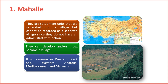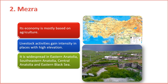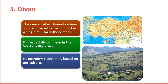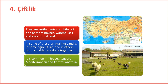All these nomenclatures are local expressions in Turkey and do not have exact equivalents in English. As a rural settlement, the Mahalle is different from the neighbourhood — it is an autonomous community governed by a mutar. They are settlement units separated from a village but cannot be considered a separate village since they lack an administrative function. They can develop and become a village. It is common in the Western Black Sea, Western Anatolia, Mediterranean, and Marmara regions. Mezra: its economy is mostly based on agriculture, with livestock activities gaining intensity in places with high elevation; it is widespread in Eastern Anatolia, Southeastern Anatolia, Central Anatolia, and Eastern Black Sea. Divan: rural settlements where several Mahals are united under a single mutar or headman, especially common in the Western Black Sea, with an economy generally based on agriculture. Siflik: settlements consisting of one or more houses, warehouses, and agricultural land, where animal husbandry, agriculture, or both are practiced; common in Thrace, Aegean, Mediterranean, and Central Anatolia.